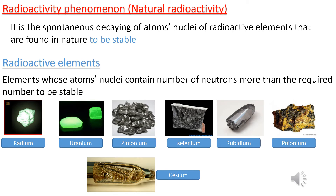Radioactivity Phenomenon: It is the spontaneous decaying of atoms and nuclei of radioactive elements found in nature to become stable. Examples of some radioactive elements include uranium, zirconium, rubidium, and caesium.